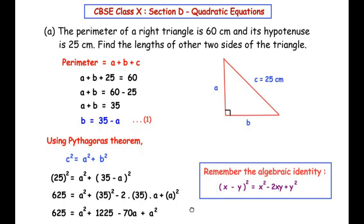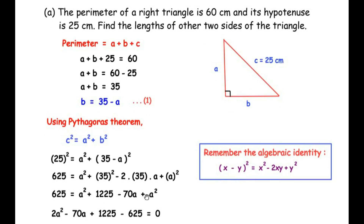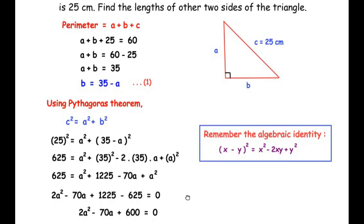Simplifying, 625 = a² + 1225 − 70a + a². Combining like terms, 625 = 2a² − 70a + 1225. Bringing 625 to the right side: 2a² − 70a + 1225 − 625 = 0, giving us 2a² − 70a + 600 = 0.